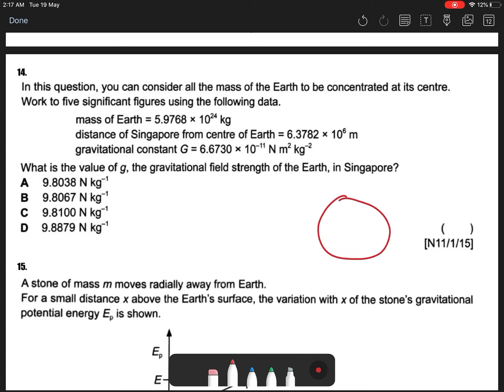Okay, so what is the value of g, the gravitational field strength of the Earth in Singapore? Okay, so Singapore is located at the equator. Okay, so this is also quite straightforward.